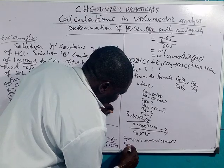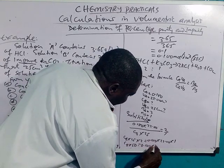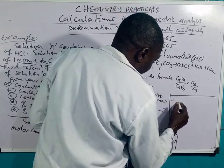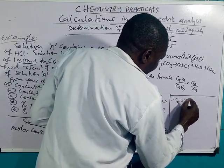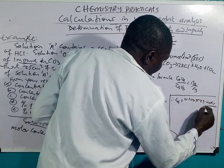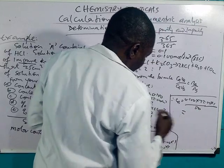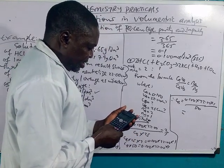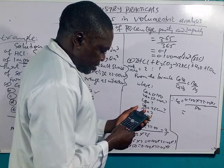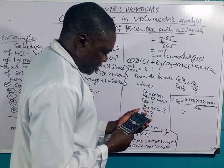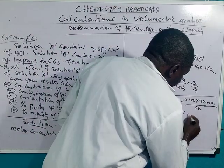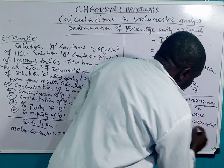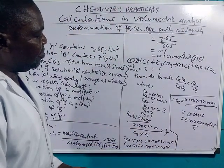Therefore, CB equals 0.100 times 22.00 times 1, divided by 25 times 2. This gives CB equals 0.0440 mol/dm³. That is the answer for part B — concentration of B in mol/dm³.